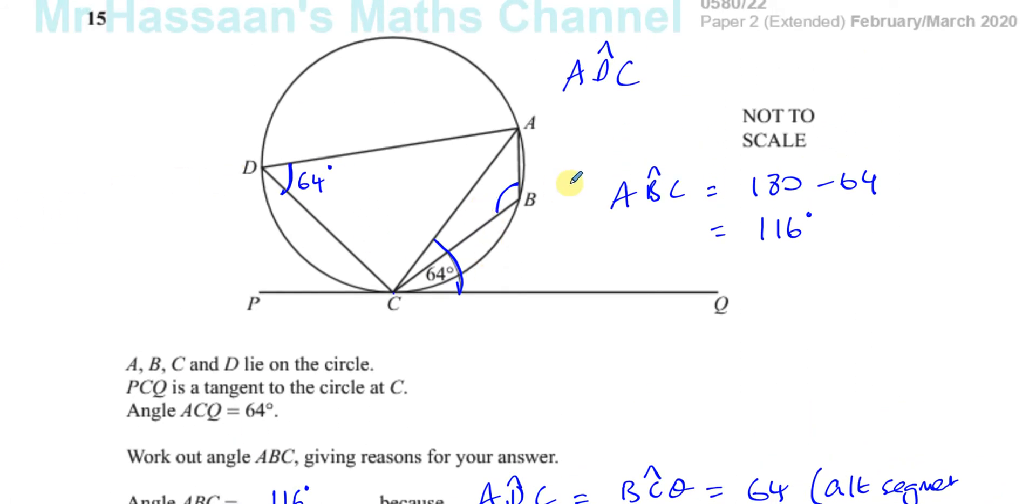Now, some people, they don't see this alternate segment theorem. I've noticed that some students, you know, they're pretty good with most of the angles and circles, but when it comes to this one, they kind of have a problem somehow. And there is another way of doing it, which I'm going to show you as well, for those students who just can't see this, or they don't understand this alternate segment theorem.